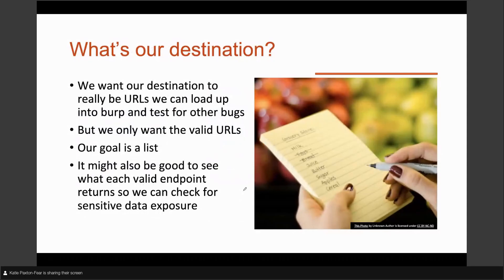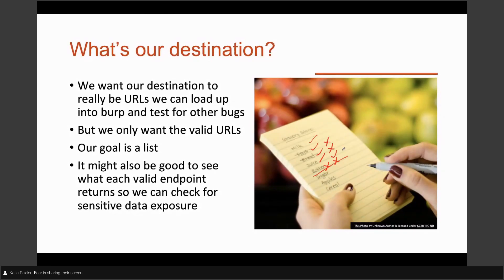Our destination is a list of URLs. We want to load it into Burp, go through our bug list, and see whether endpoints are vulnerable to certain attacks. Then we can present something that says: this is vulnerable to this, this is vulnerable to that, this API endpoint is not vulnerable to anything. We just want to check it off — yep, yep, yep, no, yep, no — and present to the client which ones had issues.